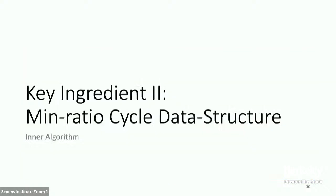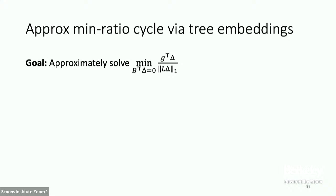This reduces our problem to solving min ratio cycles approximately. You don't need to solve them exactly — an m^(o(1)) approximation is good enough. The gradients and lengths change slowly throughout the algorithm, with coordinates changing a total of almost linear number of times. And if you're currently at solution f, the direction to the hidden optimal f-star guarantees a good solution to the min ratio cycle.